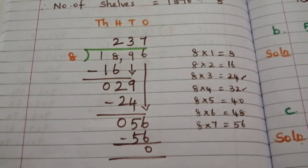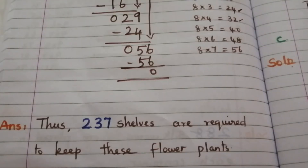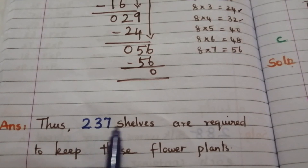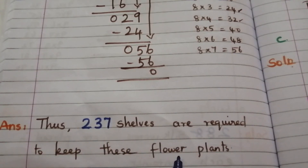Thus, 237 shelves are required to keep these flower plants.